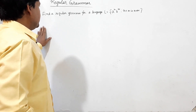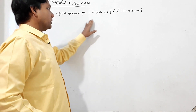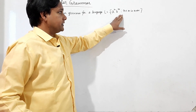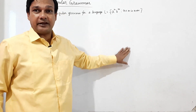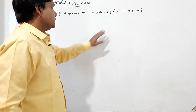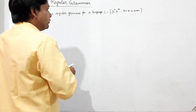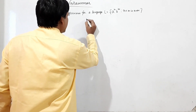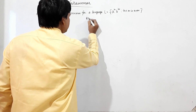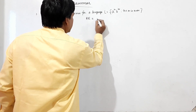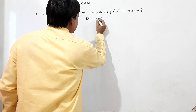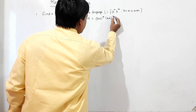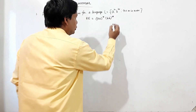I have to write a regular grammar for the language L equal to a^n b^n such that n plus m is even. The regular expression for this grammar will be (aa)*(bb)* or (aa)*(bbb)*.